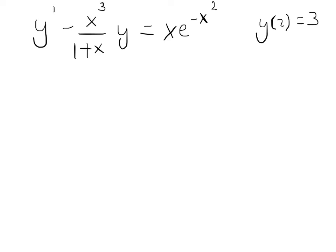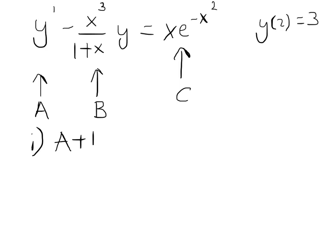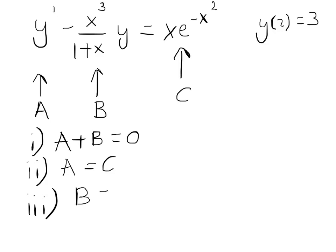Let's firstly label each of the three terms. We'll call the first one A, the second one B, and the third one C. We're looking to see which two terms dominate at large x. There are three options. Firstly, we have that A and B are dominant, so we delete C from the equation and get A plus B equals zero. The next case is when A and C are dominant, so we have A equals C. And the third case is when B and C are dominant, so we have B equals C.